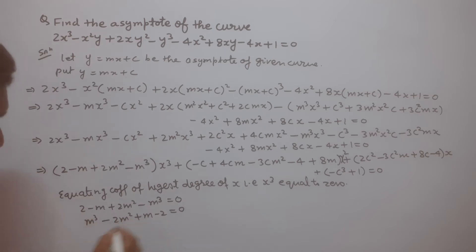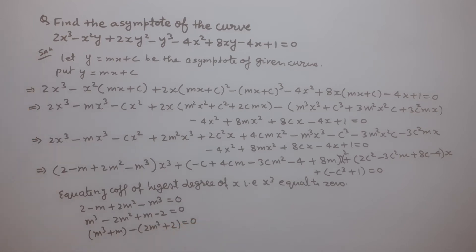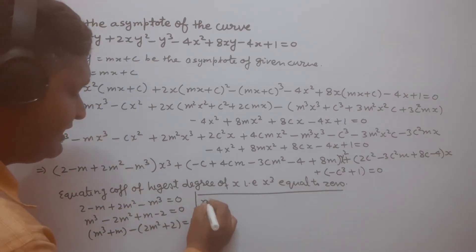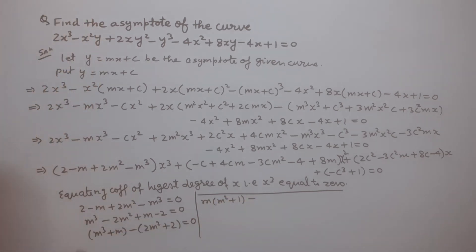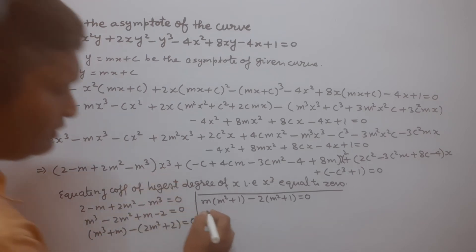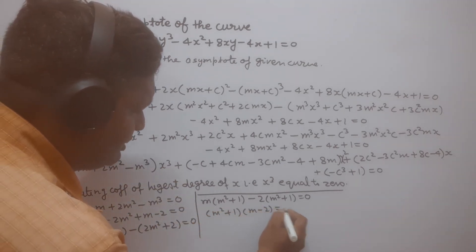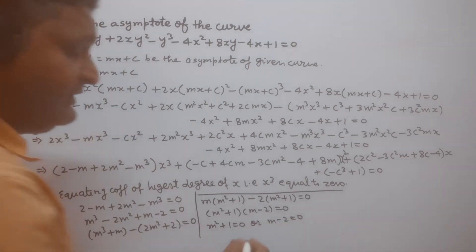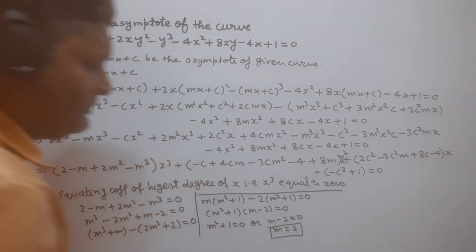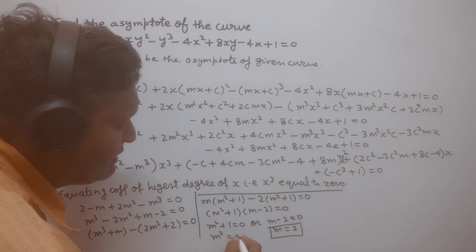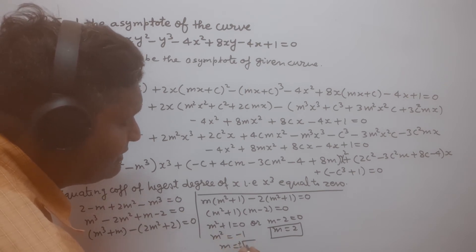We solve by grouping: (m³ + m) + (-2m² - 2) = 0, taking common m from the first bracket giving m(m² + 1), and taking common -2 from the second bracket giving -2(m² + 1). So this factors as (m² + 1)(m - 2) = 0. Either m² + 1 = 0 or m - 2 = 0. From m - 2 = 0 we get m = 2. From m² + 1 = 0, m² = -1, which gives an imaginary value of m.